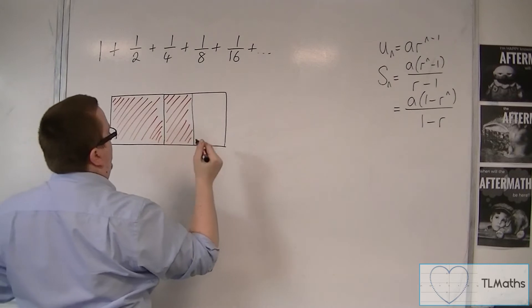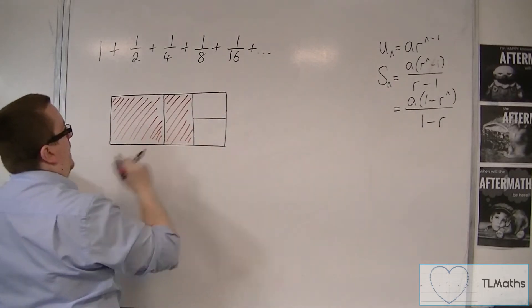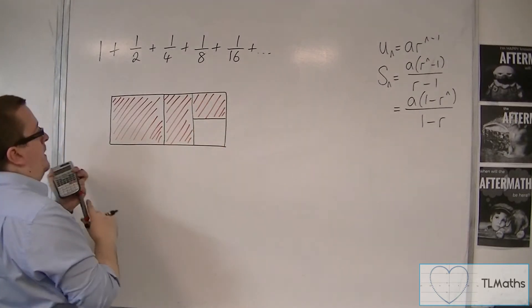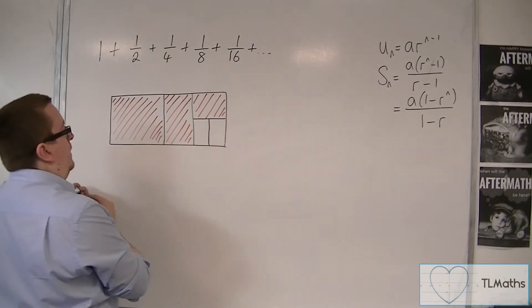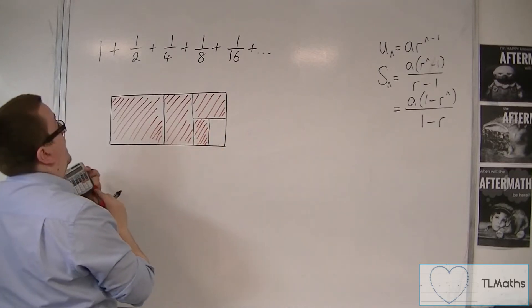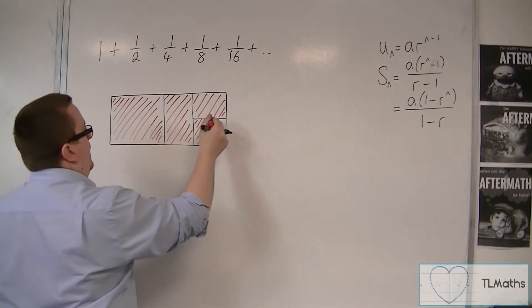Now I'm going to add on a quarter. So a quarter would be splitting this one in half and adding that on. And then I'm going to add on an eighth. So I'd have to split that bit in half and add that bit on. And then I'm going to add on a sixteenth. So I'm going to halve that bit and add that on.